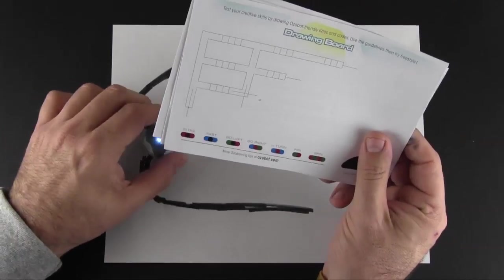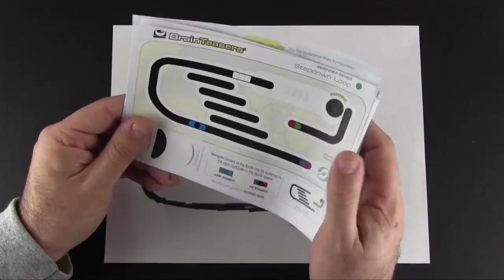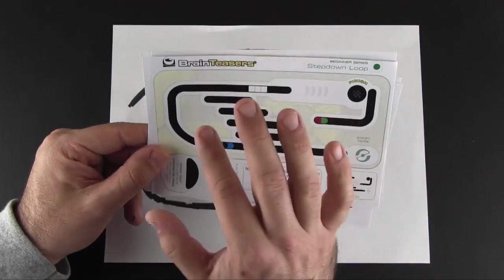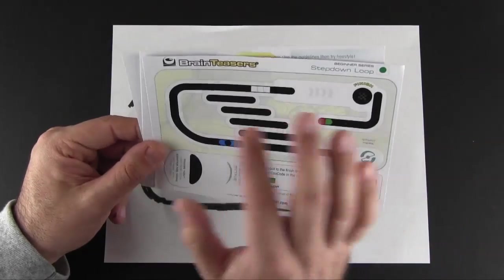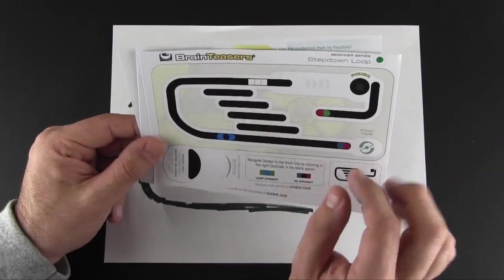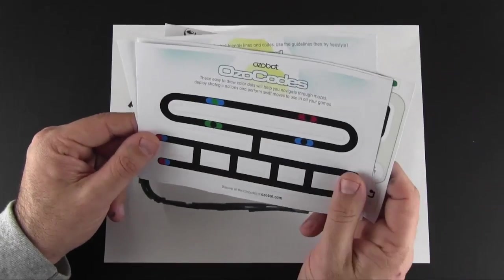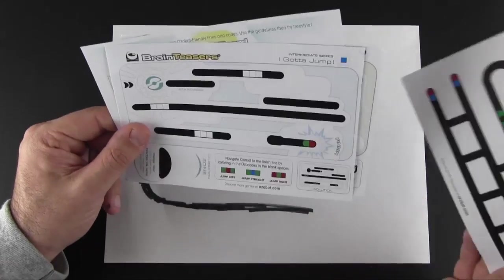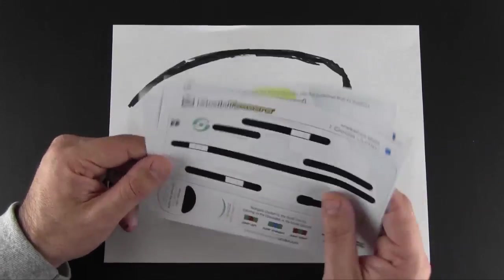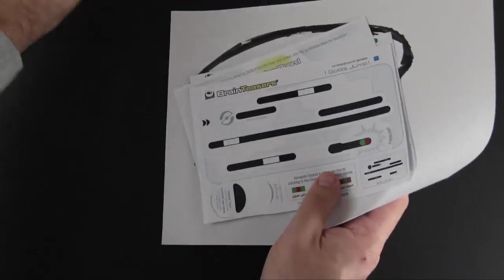So the drawing aspect, not quite sure. It didn't really like that path. Let's try it from the other way. So you can draw these to your heart's content but it also comes with these cards. Now these are kind of like brain teasers, sort of pre-programmed tracks that are missing certain elements and you're meant to draw in the codes where you think they should go to get the OZOBOT from one thing to the other.